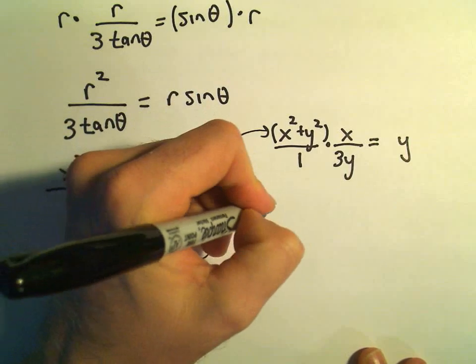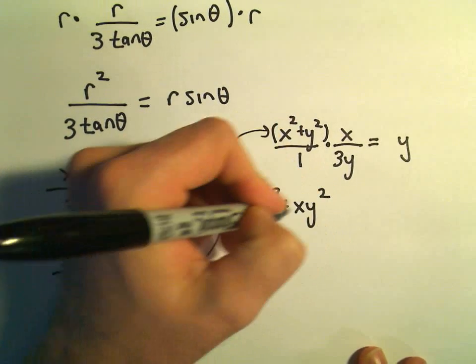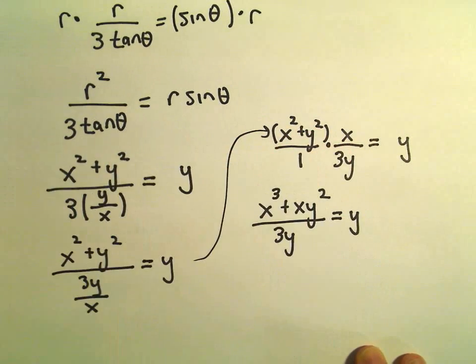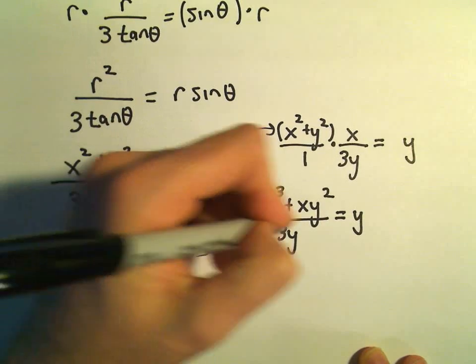I'm going to distribute the x to the numerator. That would give us x³ + xy² all over 3y = y. And just to get rid of the fractions, we can multiply both sides by 3y.